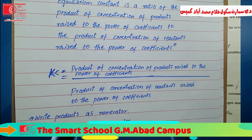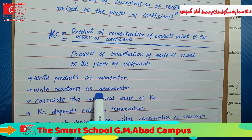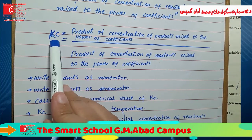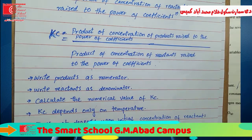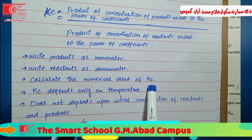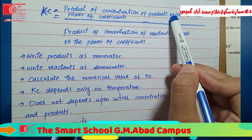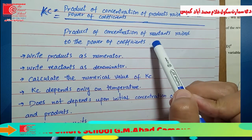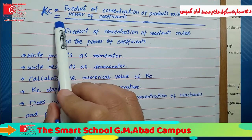For example, we will solve this problem. We keep products in the numerator and reactants in the denominator. The equilibrium constant equals products over reactants, each raised to the power of their coefficients. Using this formula, we get a numerical value for the equilibrium constant.